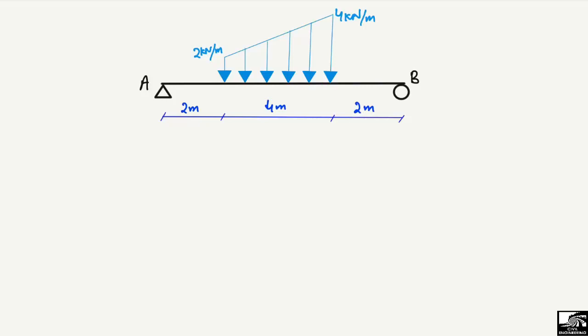The dimensions of the beam are given to us. The total length of the beam is 8 meters — 2 meters here, then the uniformly varying trapezoidal load is acting on the beam over a length of 4 meters, and then again 2 meters without any load. There are two support reactions, A and B, and we want to find those support reactions RA and RB.